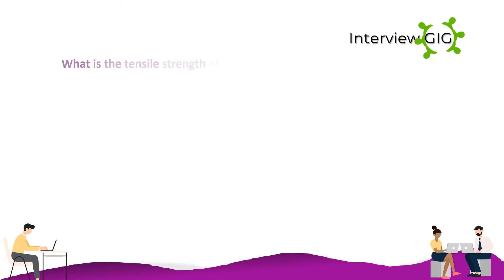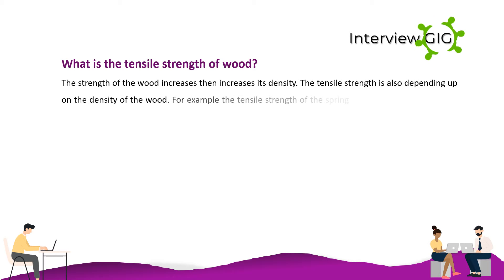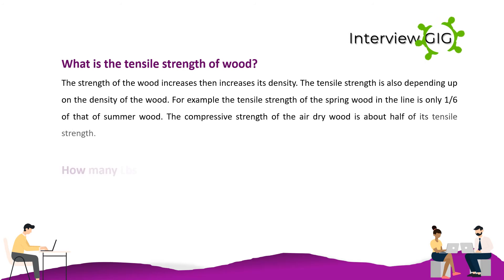What is the tensile strength of wood? The strength of wood increases as its density increases, so tensile strength also depends on the density of the wood. For example, the tensile strength of spring wood is only one sixth of that of summer wood. The compressive strength of air-dry wood is about half of its tensile strength.